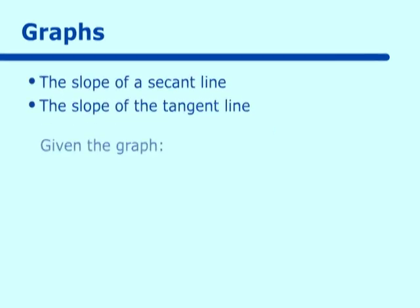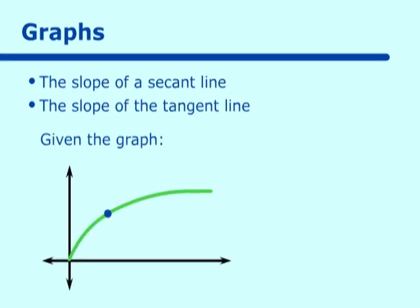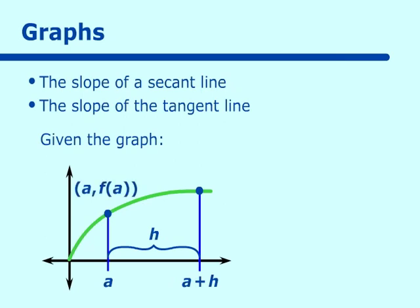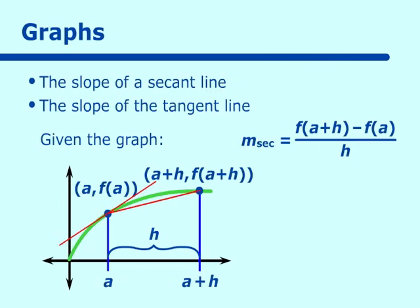A second way — another graph. This point we're going to call a, and this point we're going to call a plus h. The length between a and a plus h is called h. So this makes one point (a, f(a)) and the other point (a+h, f(a+h)). We look at a little interval h being a very, very small delta x — like 0.0001. So we can get the slope of the secant line. The change in y over change in x is f(a+h) minus f(a), all over h, giving us the slope of the secant line — the average change.